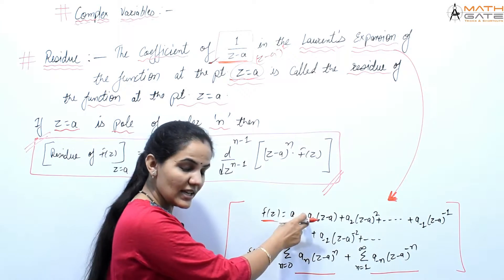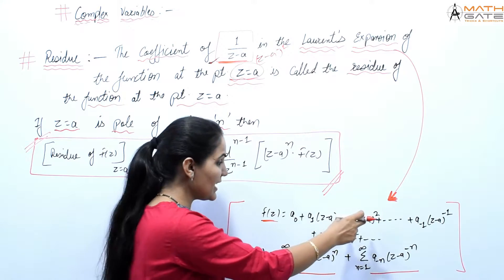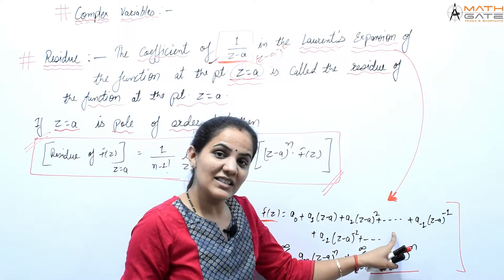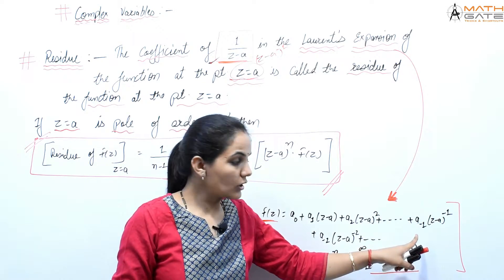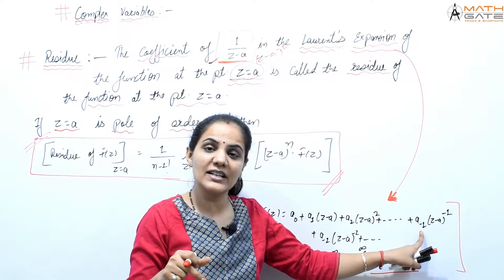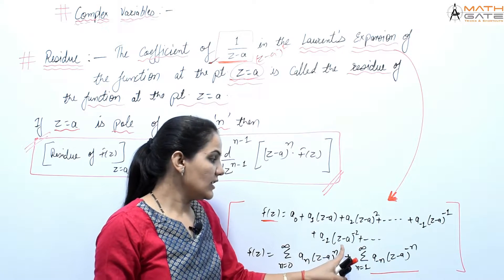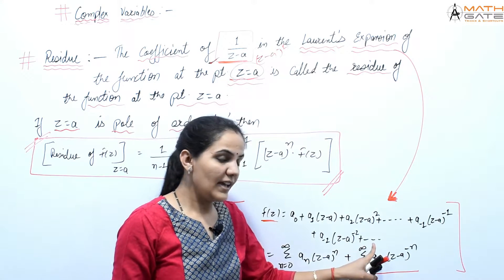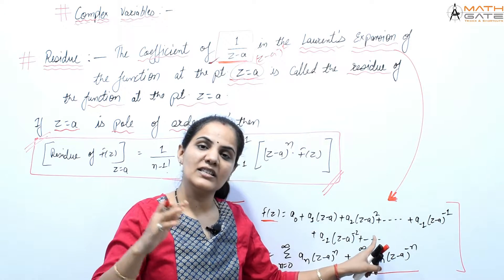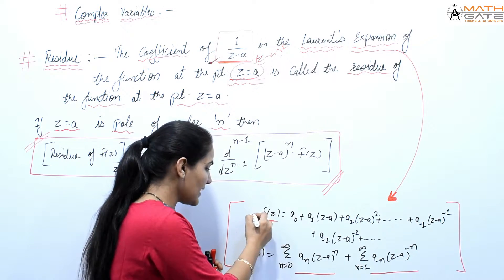The Laurent series is: f(z) = a₀ + a₁(z−a) + a₂(z−a)² + a₃(z−a)³ + ... + a₋₁(z−a)^(−1) + a₋₂(z−a)^(−2) + a₋₃(z−a)^(−3) + ... and so on. This is the Laurent series expansion.